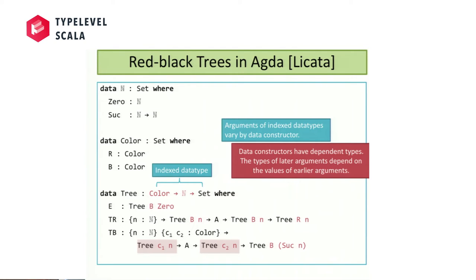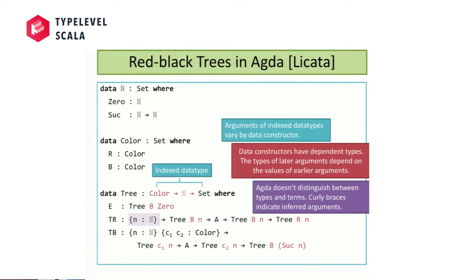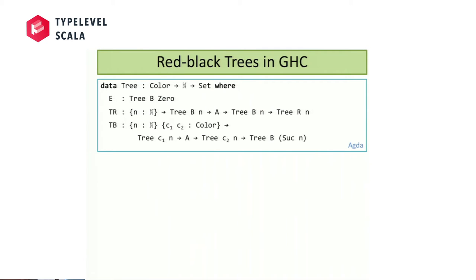In Agda, curly braces denote implicit arguments that the type checker fills in automatically. There's no distinction between types and terms in Agda — types are just things you use as types. Can we do this in Haskell? The answer is yes. Here I'm using two features to directly copy that data type over. Just like Agda can have indexed data types, Haskell can also have types where constructors vary in their parameters — that's called a GADT, Generalized Algebraic Data Type.